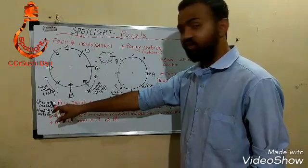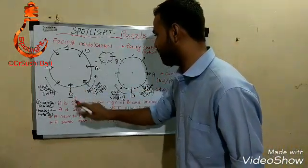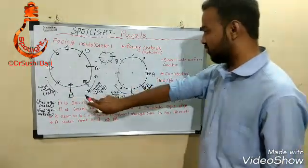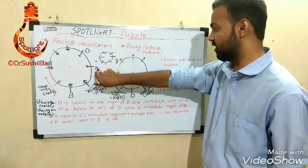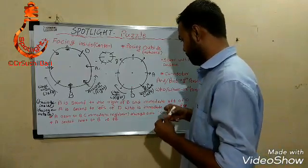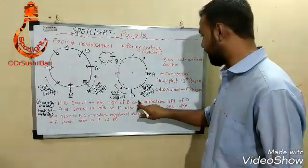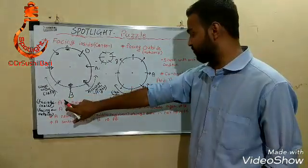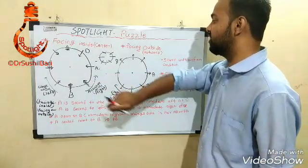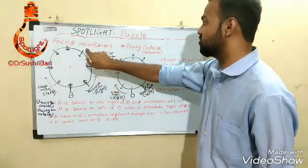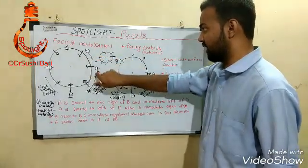For a facing inside example: 'A is second to the right of B and immediate left of D.' If B is placed, since we're facing inside, the right side is anti-clockwise, so A is two positions anti-clockwise from B. The connector 'and' tells us the next statement also refers to A. Immediate left of D means clockwise, so D is placed clockwise-adjacent to A.